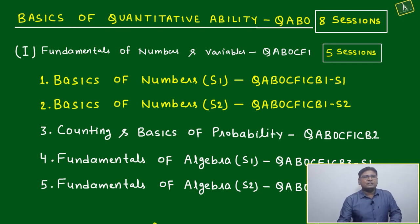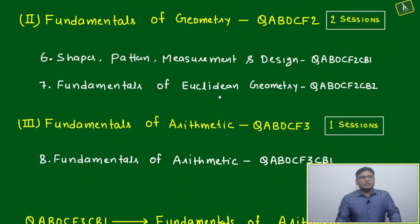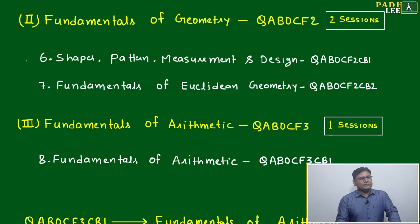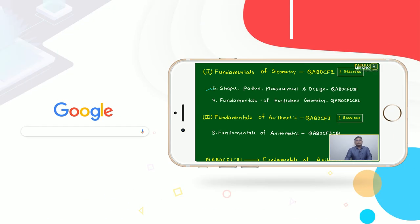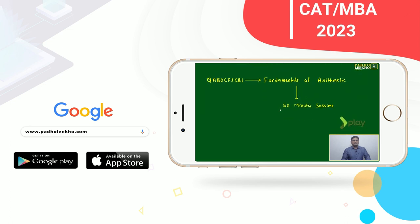Basics of Quantitative Ability - these total 8 sessions. Your first folder will have five sessions related to numbers and algebra: two sessions from numbers, one related to counting, and two related to algebra. Another two sessions on geometry covering basic shapes, patterns, measurement and design, and fundamentals of Euclidean geometry. Another session is fundamentals of arithmetic, which we're doing today. It will be around 50 minutes.